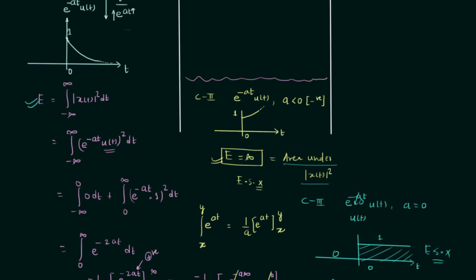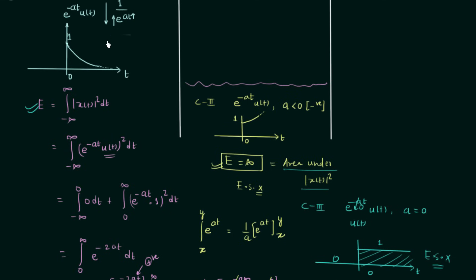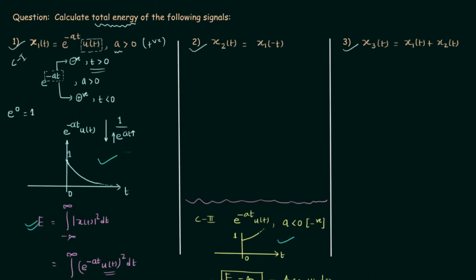Comparing the three waveforms, the last two are not infinite converging signals, but the first signal is. An important conclusion: the energy is finite for an infinite converging signal or graph. This is an important result drawn from the first question.